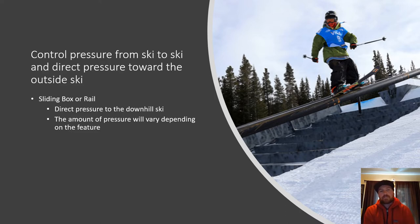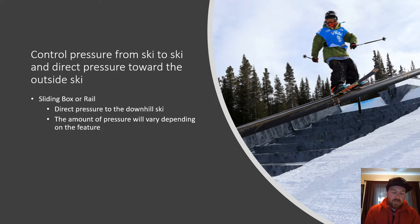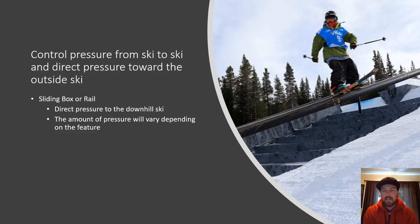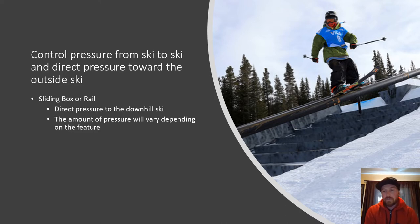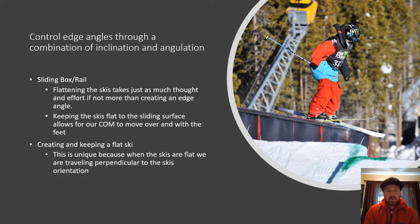Now another fundamental: controlling pressure from ski to ski — directing more pressure toward the outside ski. I've combined this with edge angle because when sliding a box or rail these two go hand in hand. I want to direct more pressure toward that downhill ski. How much pressure depends on what I'm trying to do — there are instances where I may be balanced over the back foot to create rotation — but when first learning to slide a box or rail, balancing over the downhill foot is going to be beneficial.